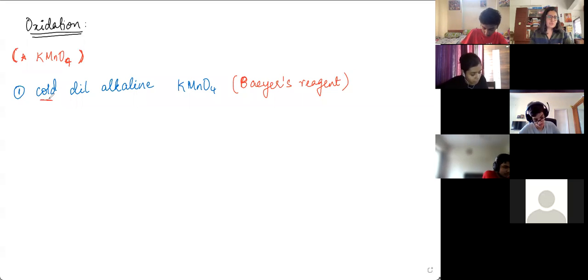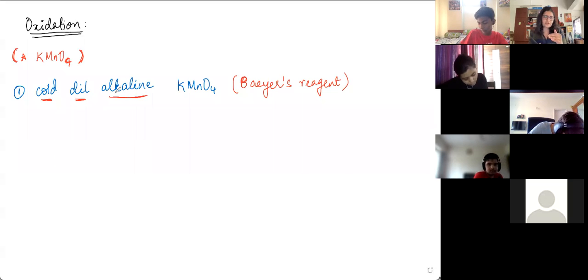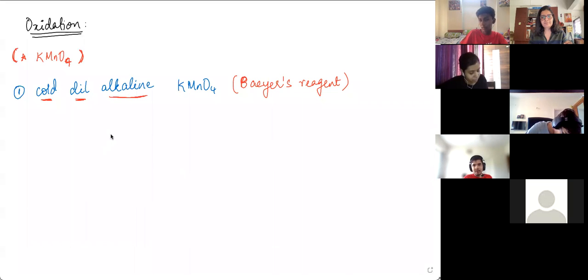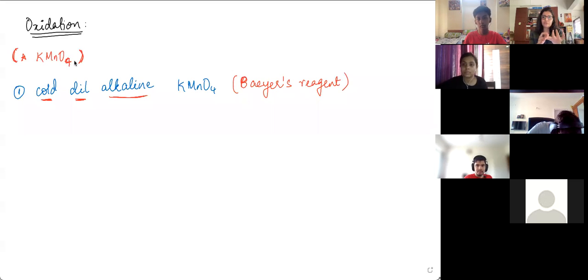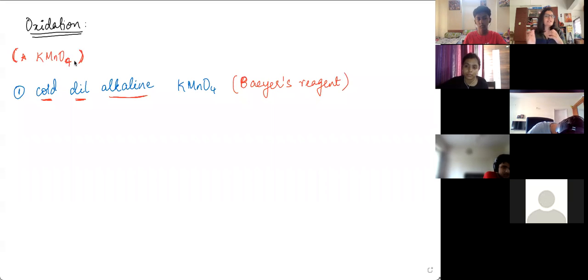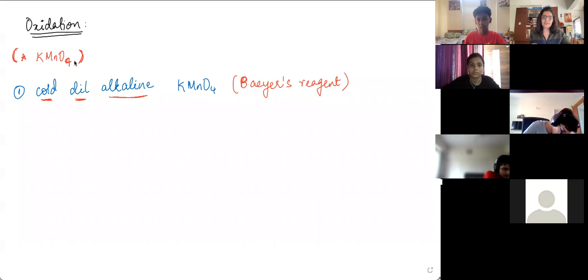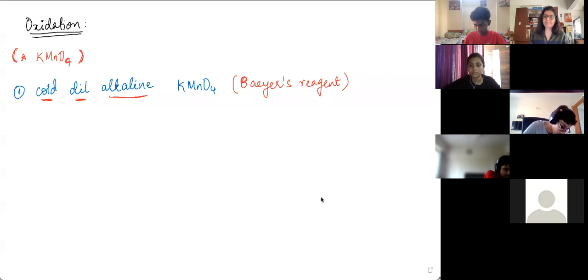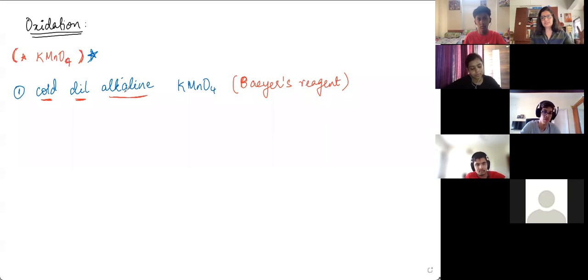It being cold and dilute and alkaline instead of acidic basically reduces the strength of the oxidation, the strength of KMnO4. In this particular case - oxidation of alkenes - we are looking at KMnO4. But in general, in chemistry, potassium permanganate is one oxidizing agent, dichromate is another. For alkenes, we've also seen oxygen gas in the presence of a copper tube. There are quite a few - PCC is another. Right now for alkenes, we'll primarily learn oxidation with KMnO4 and ozonolysis.